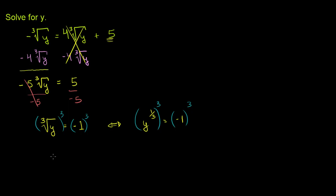The left-hand side becomes y. On the right-hand side, negative 1 to the 3rd power: negative 1 times negative 1 is 1, times negative 1 again is negative 1. So we get y is equal to negative 1 as our solution.